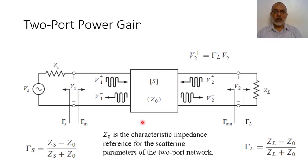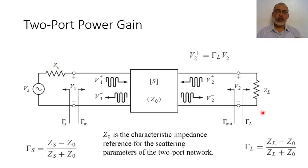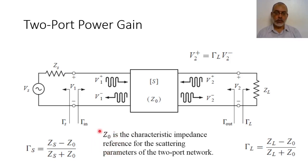This 2-port network amplifier is connected at the input to the source, which has source impedance Z_source, and at the output to the load Z_load. The S-parameters are measured with respect to a reference characteristic impedance Z_0. Usually in microwave circuits the value of Z_0 is 50 ohms; in some cases it could be 75 ohms, and in very rare cases 300 ohms, but conventionally Z_0 is usually 50 ohms.